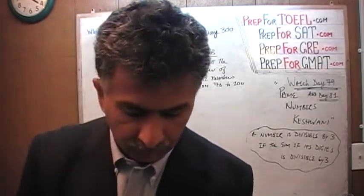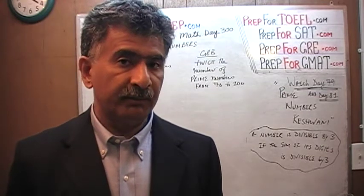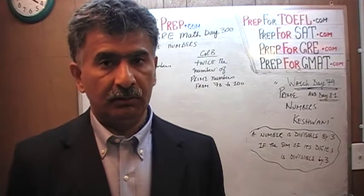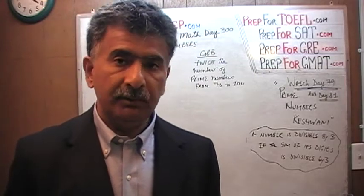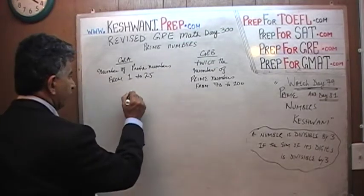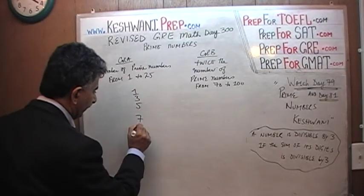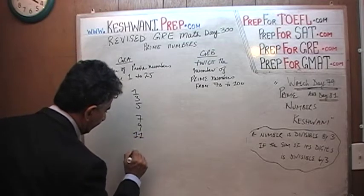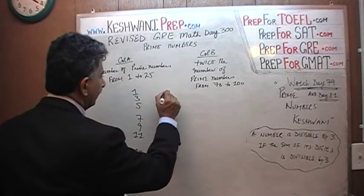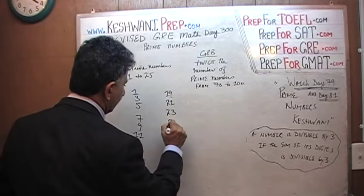The easiest, simplest, and quickest way to locate prime numbers is to make a list of all the odd numbers in the range, because an even number cannot be a prime number. So from 1 to 25, we have: 1, 3, 5, 7, 9, 11, 13, 15, 17, 19, 21, 23, and 25. How many of them are prime numbers?